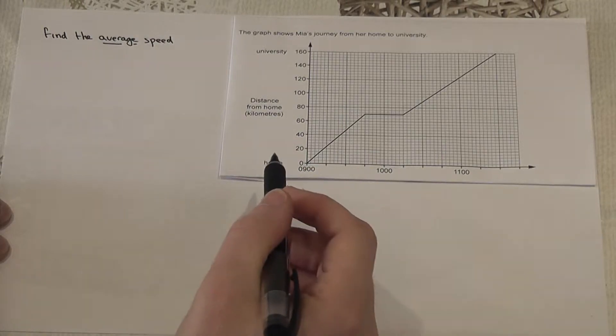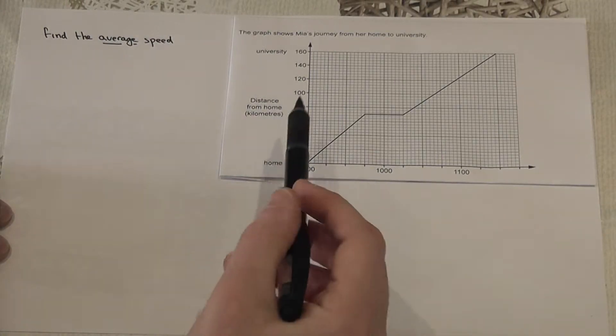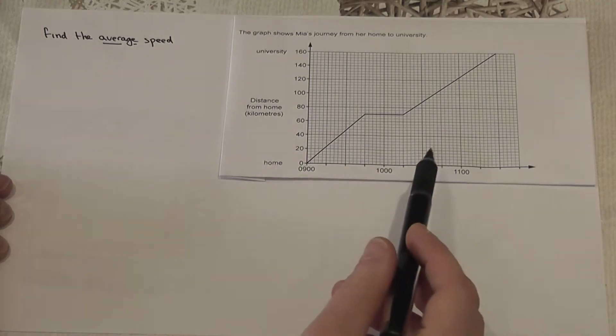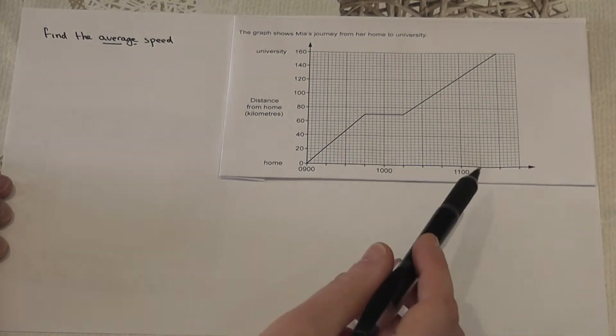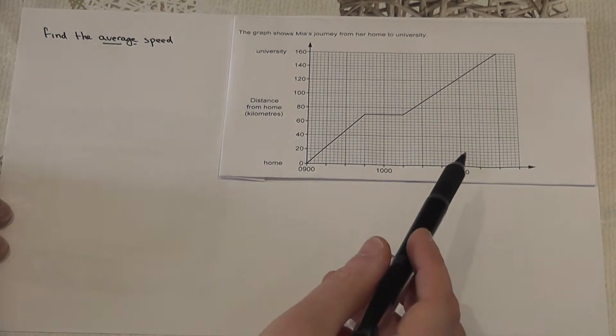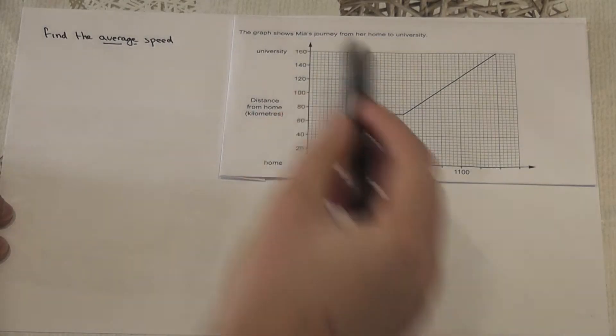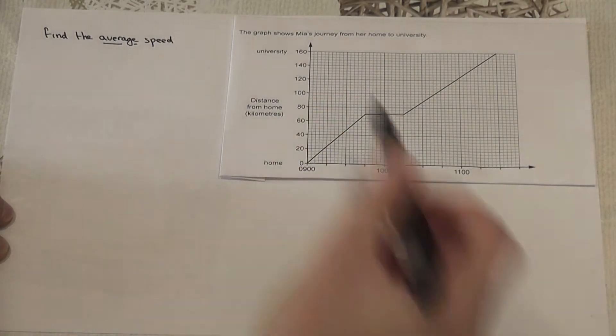In this video we briefly review the notion of average speed given a distance time graph. Now this graph shows Mungold Meyer who's going from home to university.